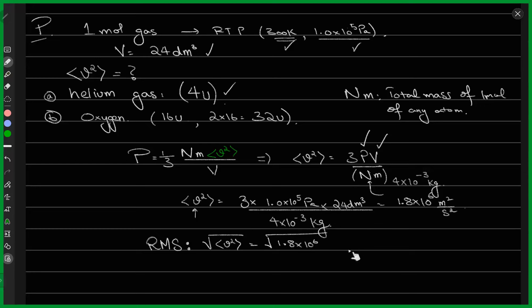The question was to find the root mean square value, which we write as RMS. The root mean square velocity is simply the square root of this value — the square root of 1.8 × 10⁶. That is the average velocity with which helium atoms will be moving in a container at 300 Kelvins and 1.0 × 10⁵ Pascals.